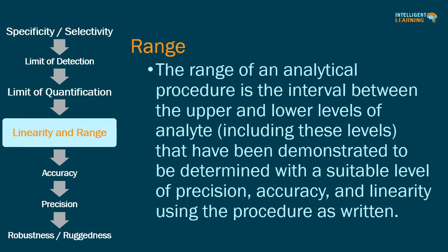The range of an analytical procedure is the interval between the upper and lower levels of analyte — including those levels — that have been demonstrated to be determined with a suitable level of precision, accuracy, and linearity using the procedure as written. The lower end of the range is bounded by the LOQ, and the upper end is defined by concentrations at which significant anomalies in analytical sensitivity are observed. Various documents use the term range or working range.